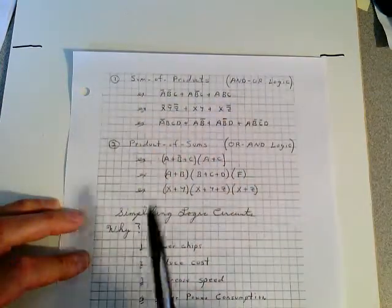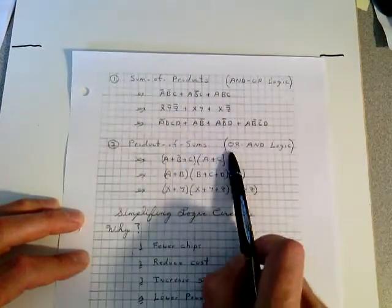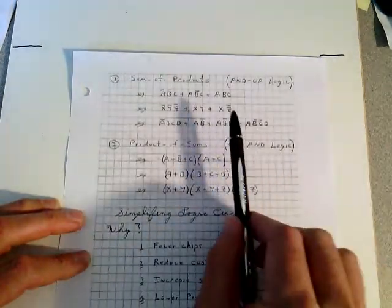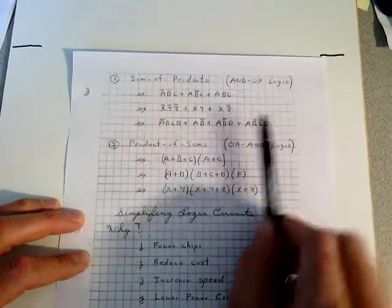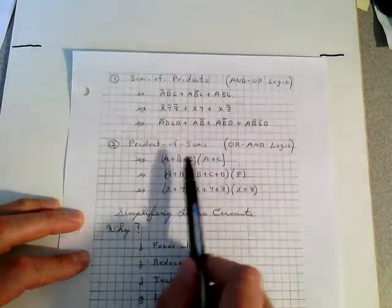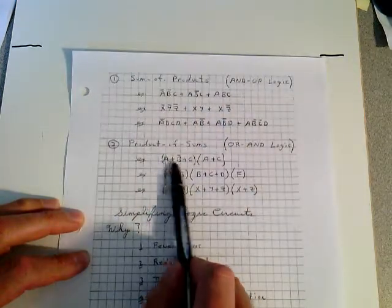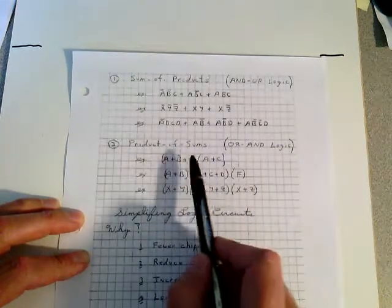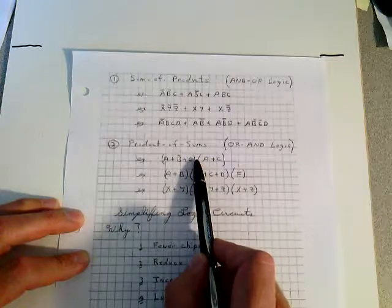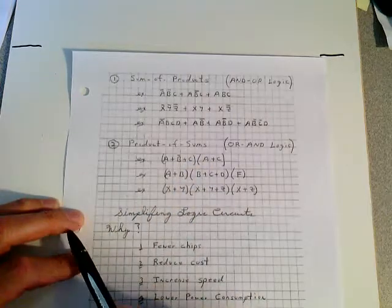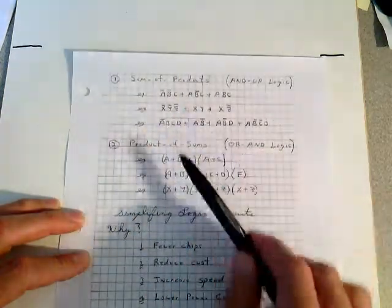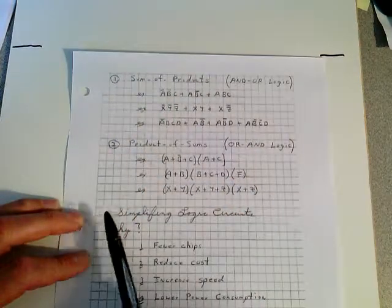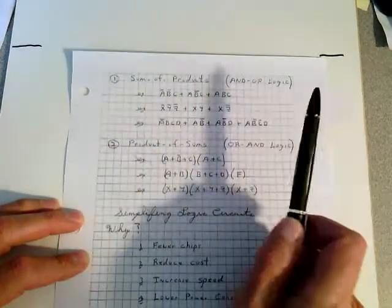Product of sums is OR-AND logic. The output gate is AND. So it's first level OR, second level AND, and you can see that you have an OR gate, in this case a three input OR gate, in this case a two input OR gate, and then the output, those two gates feed into an AND gate. The most popular out of the two, and the one we're going to use this semester, is going to be the sum of products.